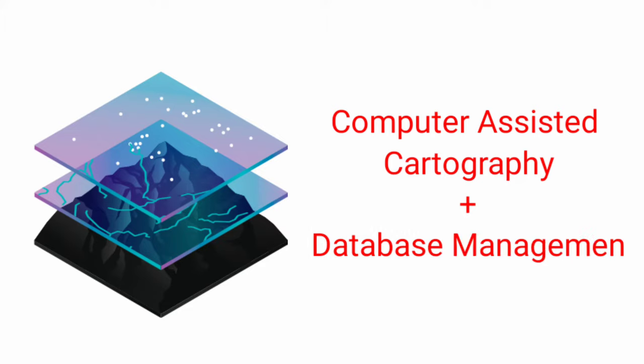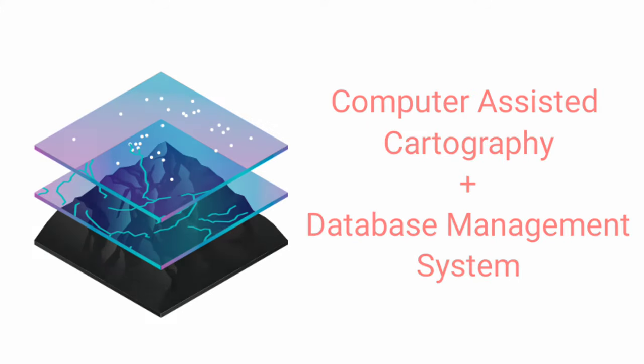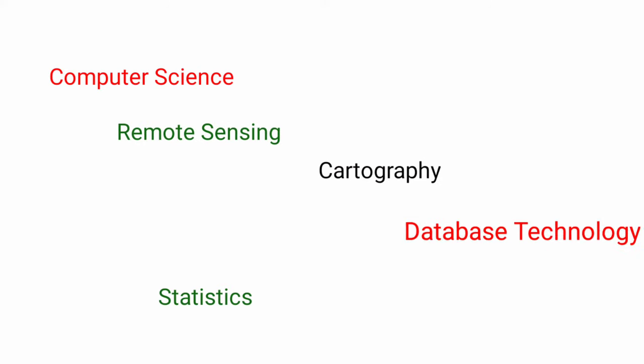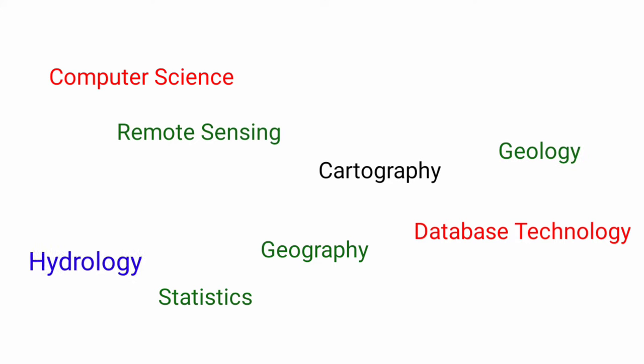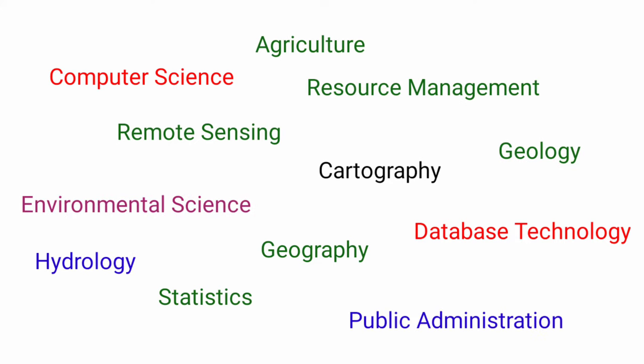GIS is an amalgamation of computer-assisted cartography and database management systems, and draws conceptual and methodological strength from both spatial and elite sciences such as computer science, statistics, cartography, remote sensing, database technology, geography, geology, hydrology, agriculture, resource management, environmental science, and public administration.